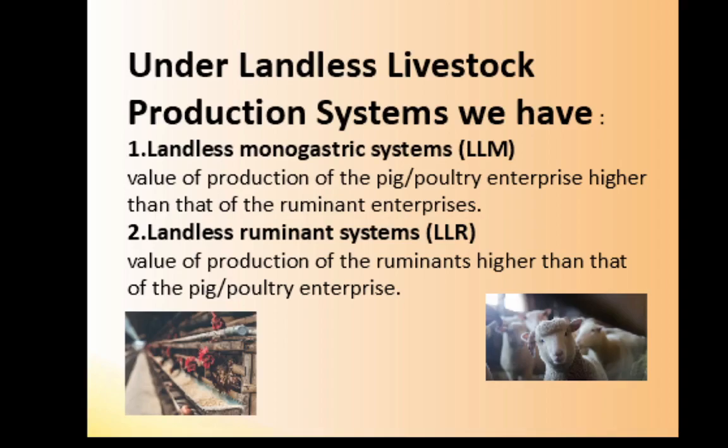There are two types of landless livestock production systems: landless monogastric and the landless ruminant system. For the landless monogastric system, the value of production of the pig or poultry enterprise is higher — meaning you have more pigs and poultry than cows. For the landless ruminant system, the value of production of the ruminants is higher than that of the pig or poultry enterprise, meaning you have more ruminants than pigs or poultry.